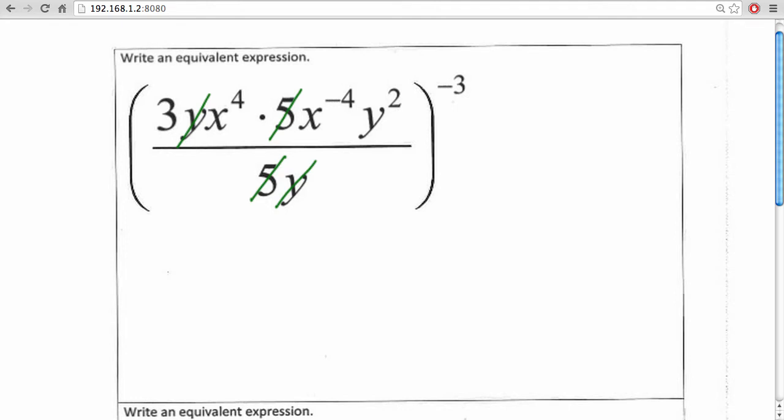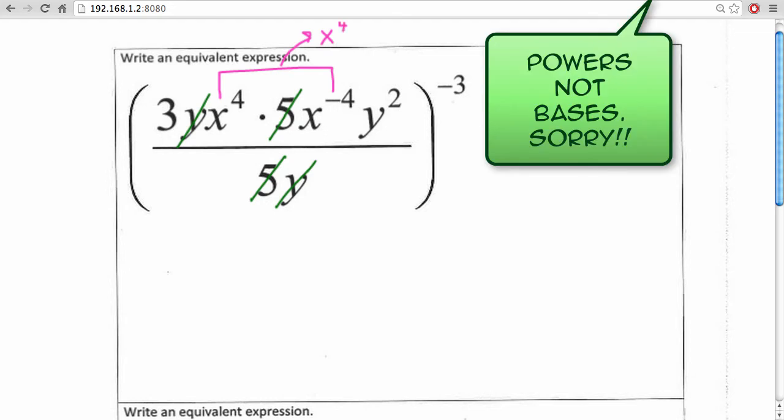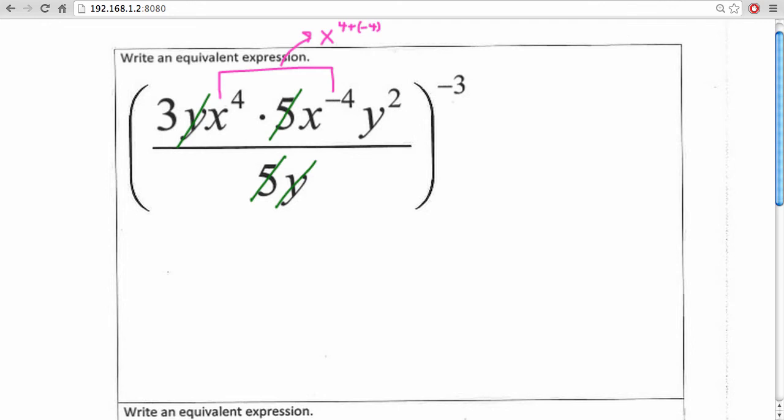You might also notice that we have an x to the fourth times x to the negative fourth. The product property tells us that we can combine these two by adding your bases together. So we have x to the fourth plus negative fourth. The reason why we can do this is because they have the same base.